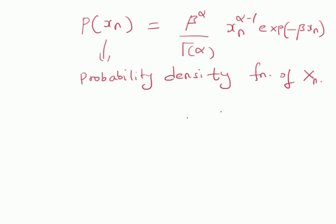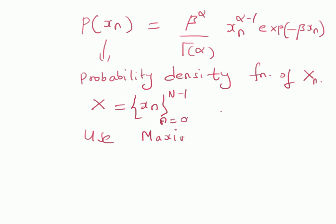Our goal is to estimate the parameters alpha and beta given N number of measurements. That is, given x_n for n equal to 0 to N minus 1 — that is, a vector x having N values x_n — how do we find the parameters alpha and beta using the maximum likelihood estimation method.